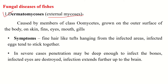The first type of disease is Dermatomycosis, also called external mycosis. It is a fungal disease caused by various members of class Oomycetes. This disease can grow on the outer surface of the body — on the skin, fins, eyes, mouth, and sometimes on the gills.